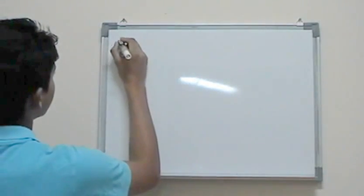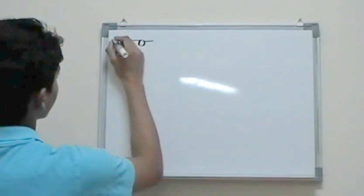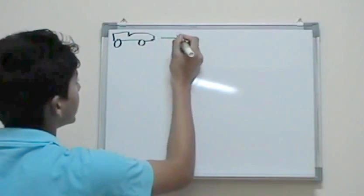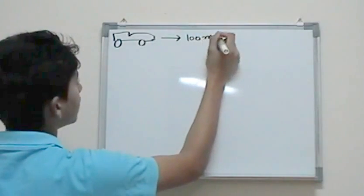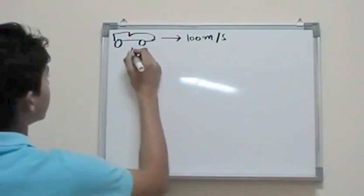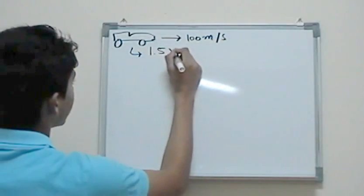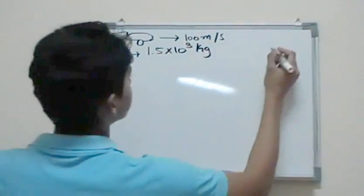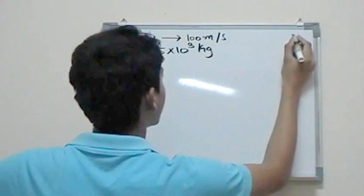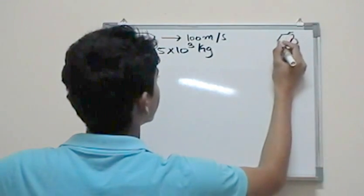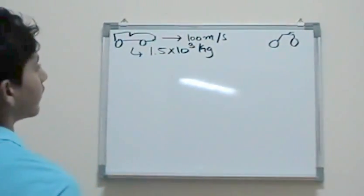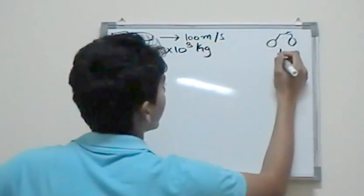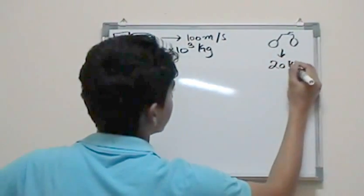The first thing that is given is a car. This is a weird car, but it's a car. So it's moving at 100 meters per second. This thing has a mass of 1.5 times 10 to the 3 kg. And here's the bike. I'm not a good drawer, but let's say this was a bike. And all it gives is this thing has 20 kg of mass.